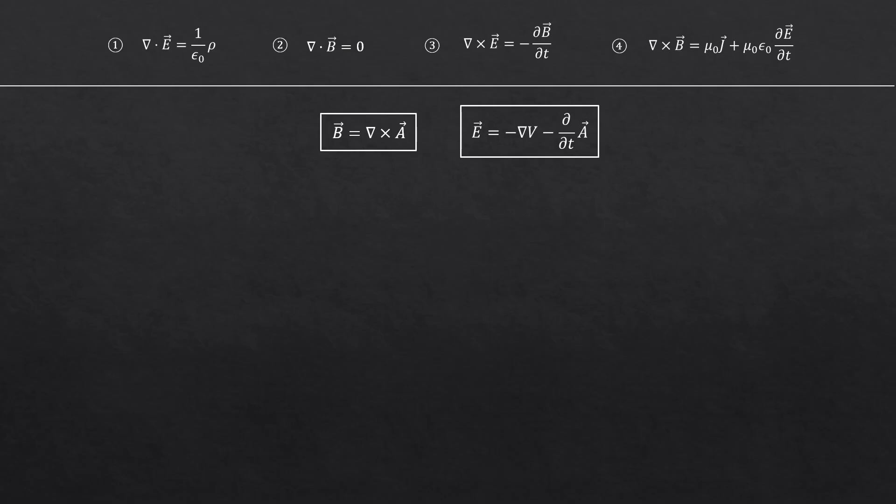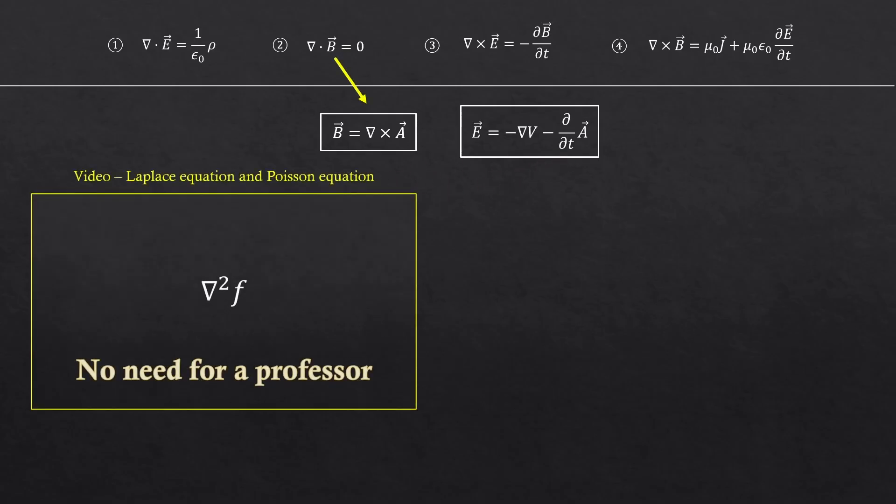Actually, two of the four Maxwell's equations are already kind of built into the way we define the electric field and the magnetic field using potentials. The divergence of a vector being zero automatically means it can also be written as a curl of another vector. So the second Maxwell's equation is already built into this definition.